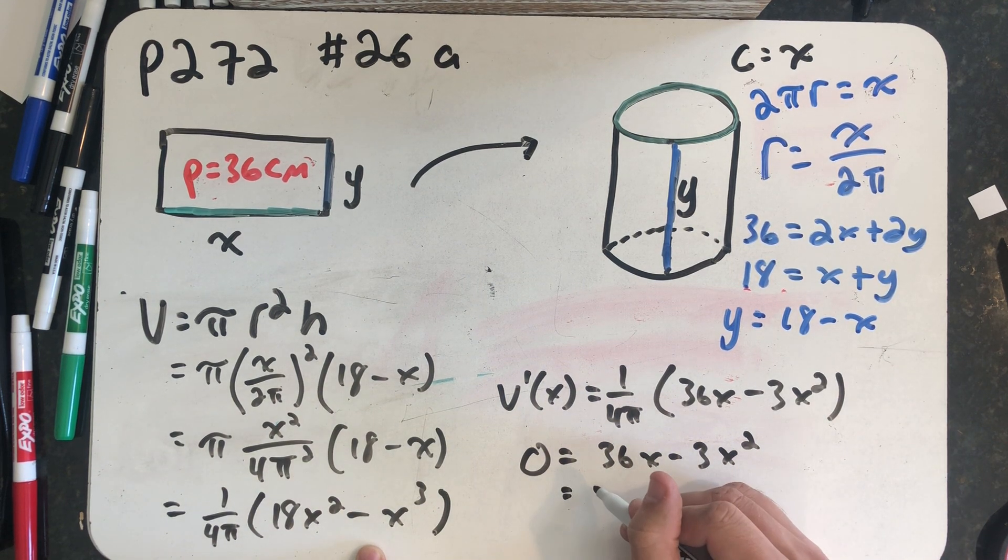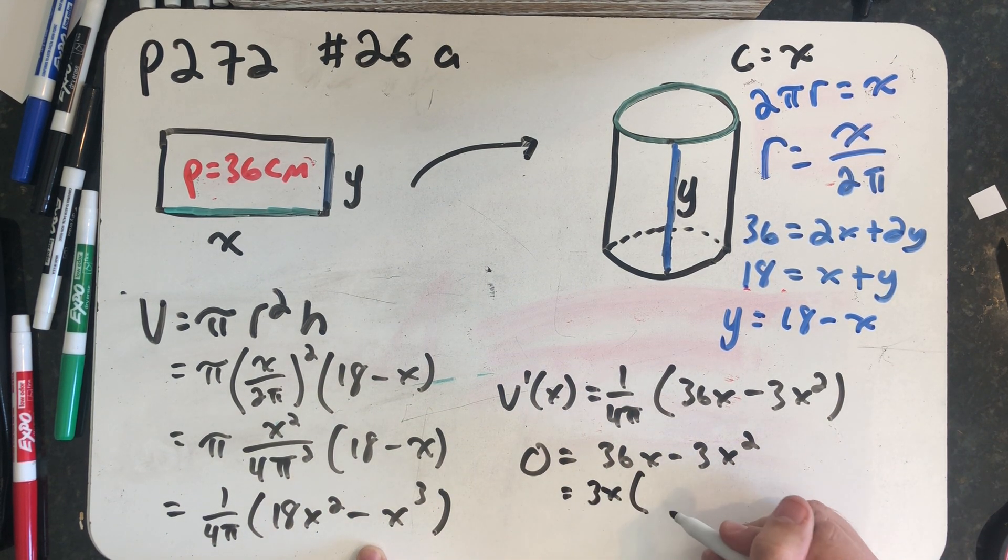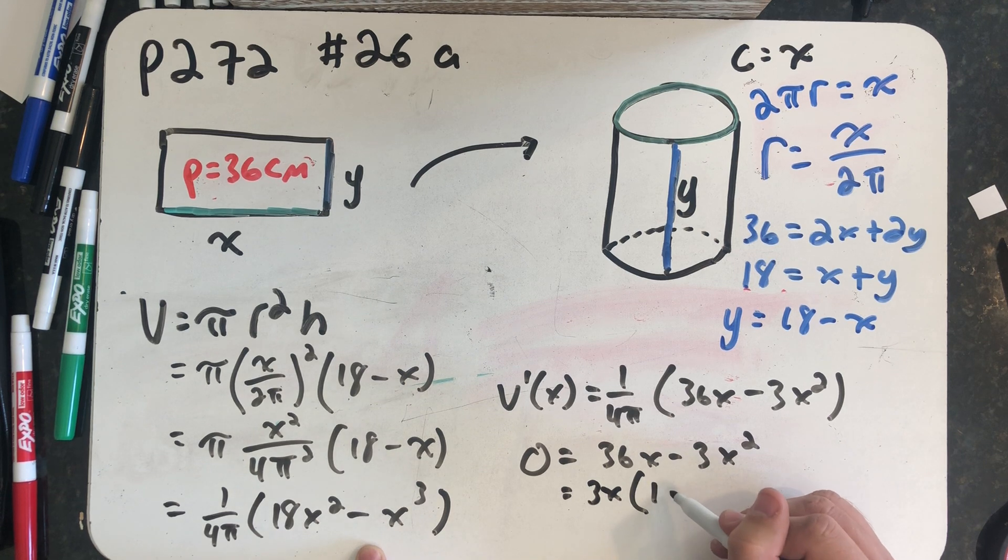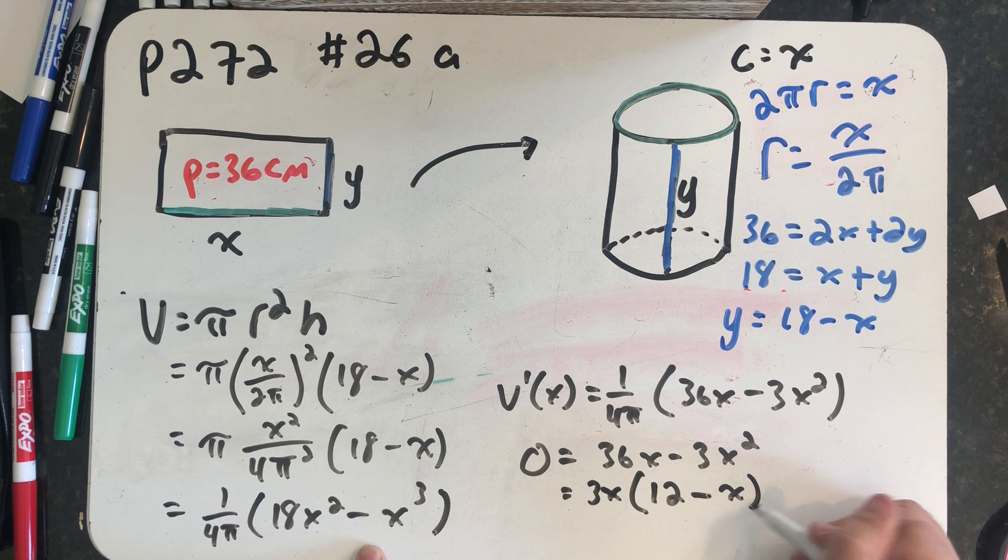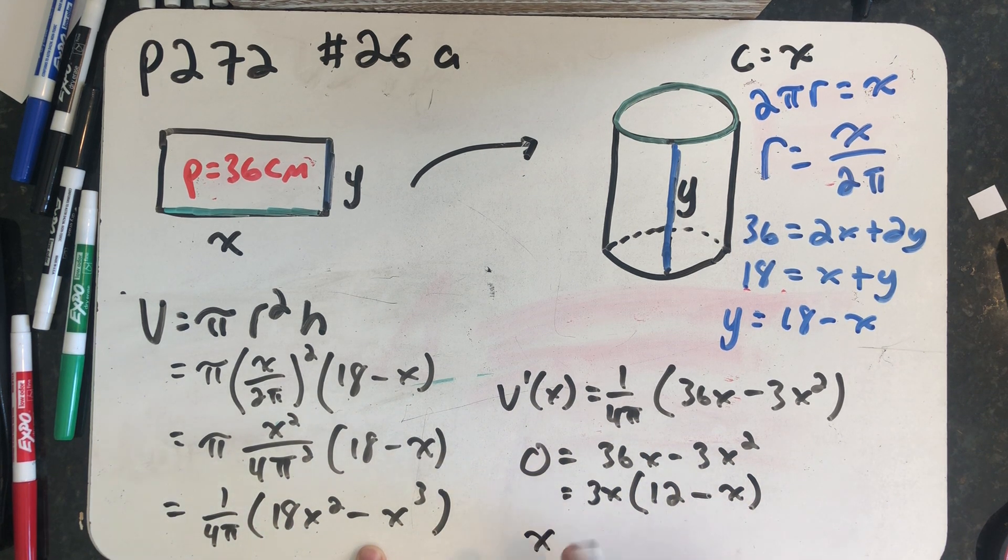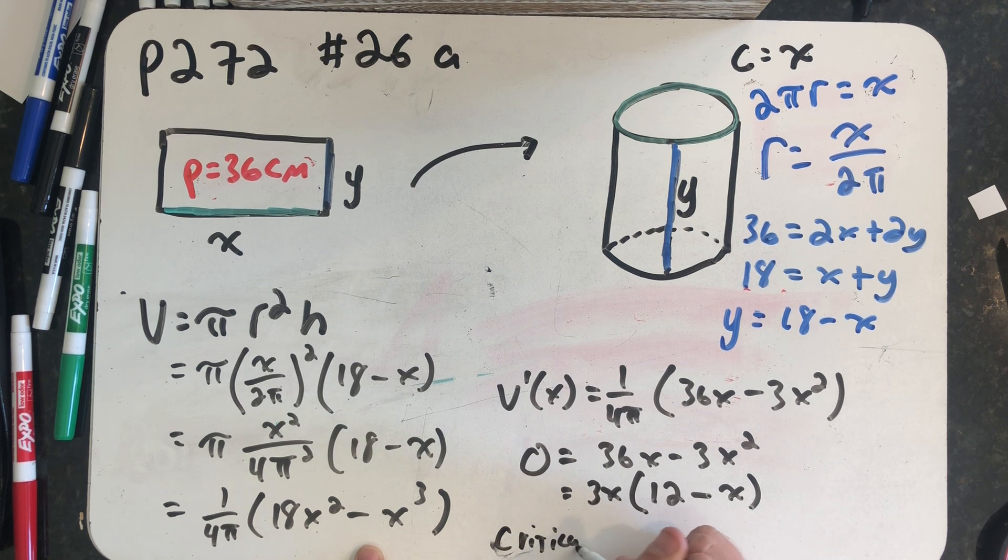I can factor out a 3x, telling me there would be critical points at 0 and 12. I'm only going to write down the one at 0, though. Excuse me, I'm only going to write down the one at 12.